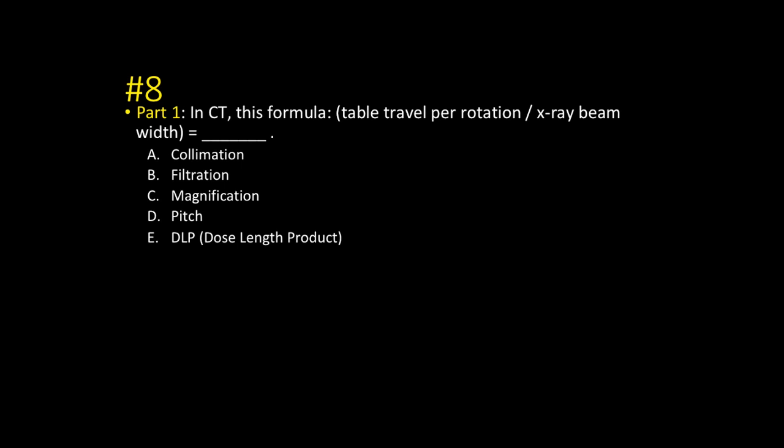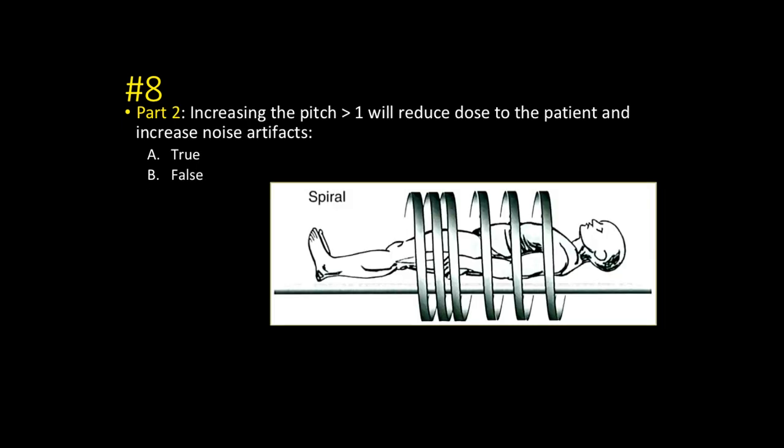Number eight — a physics question, not an artifact. In CT, the formula for pitch is: table travel per rotation divided by x-ray beam width. Part two: increasing the pitch greater than one will reduce the dose to the patient but increase noise artifacts. You're increasing the space between acquisitions, which reduces dose but gives you a worse image with more noise.